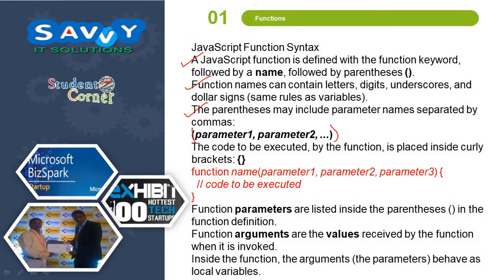Like, in between, we need to pass the arguments. The code to be executed by the function is placed inside curly brackets. This is the complete syntax for a function.